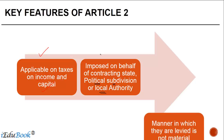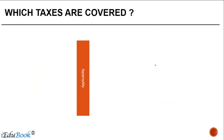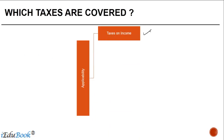The manner in which they are levied is not material — whether you have to pay them directly, or whether the person making the payment to you deducts it by way of a withholding tax or a TDS, that is immaterial. Now, which taxes are covered? Taxes on income, and any additional tax.